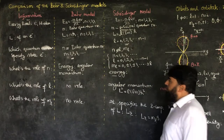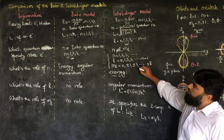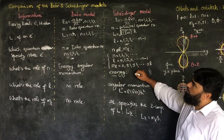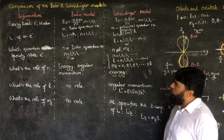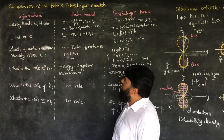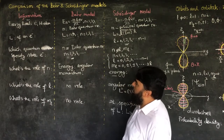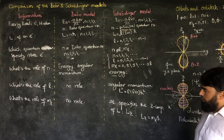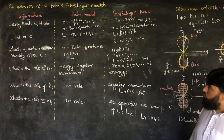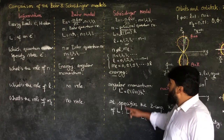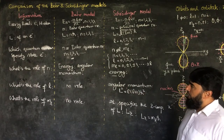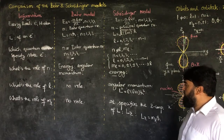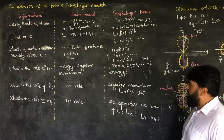The two models are completely different from each other. The Schrödinger model provides the full picture of atomic structure, while the Bohr model was a very crude form as compared to this model. In the next lecture, we will start with the angular momentum of an electron in the hydrogen atom, which can be extended to other elements as well.